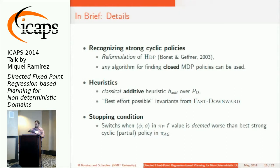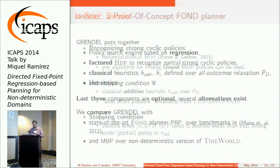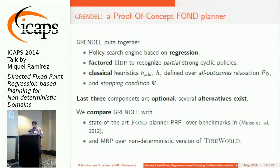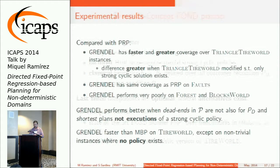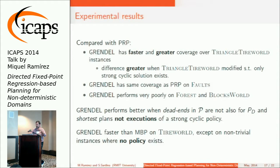We switch between trying to grow the set of partial policies we know are closed and exploiting those partial policies — specifically when the policies in the base are deemed worse by the evaluation function. We put this together into a planner called Grendel, and compare Grendel with PRP and with MVP. The results were interesting: Grendel is faster and has slightly greater coverage on triangle tireworld, which was discussed two talks ago.